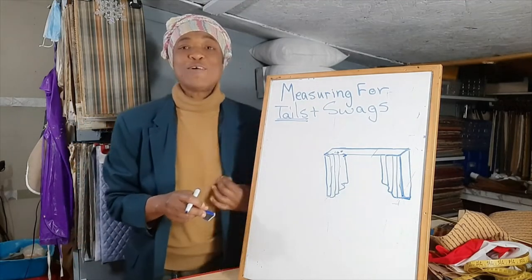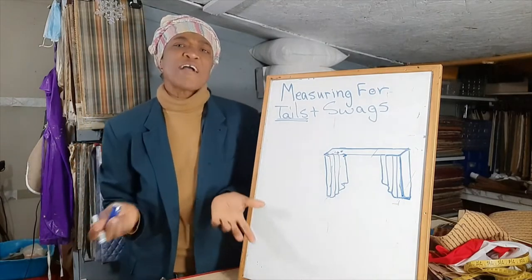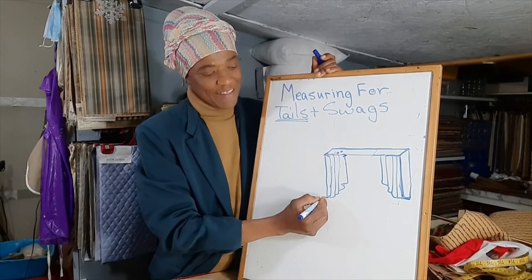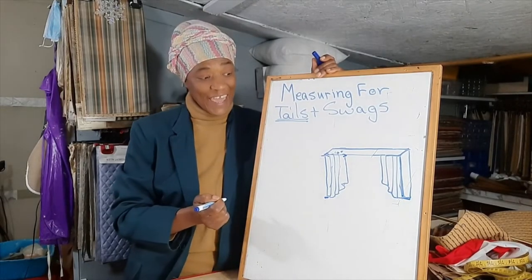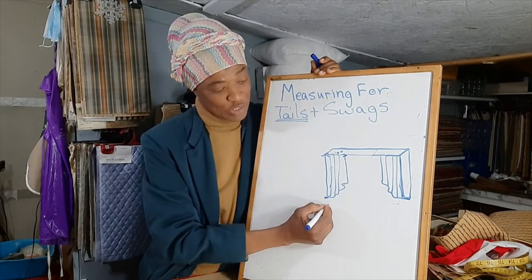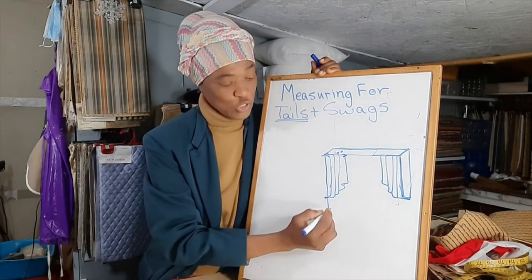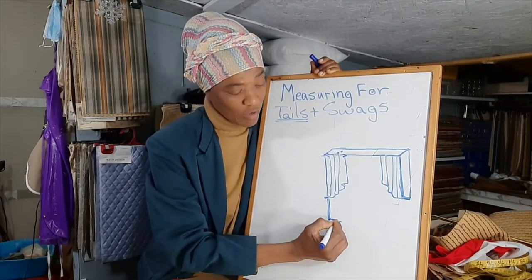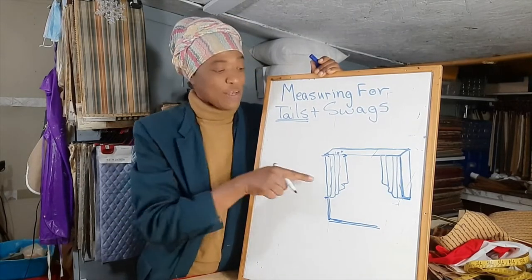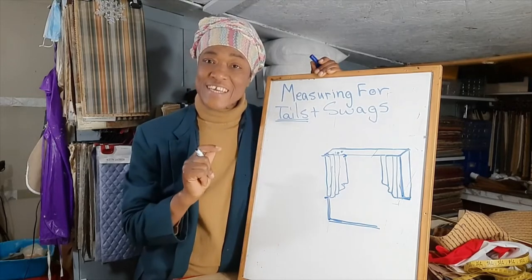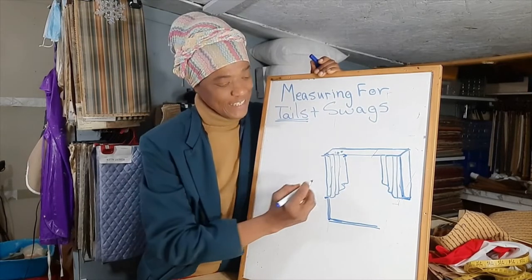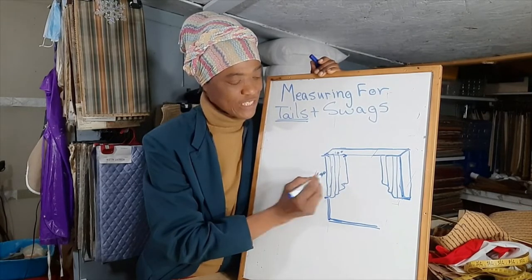Another measurement you will need is the length of your tail. I dealt with this in a previous video when we looked at some general rules or guidelines for making swags and jabots. The general rule is that your tail should not sit further down on your window than two-thirds of the height of the window. Let's pretend this window is 60 inches high — two-thirds of 60 inches is 40 inches, so our tail will be 40 inches.